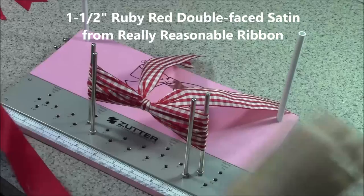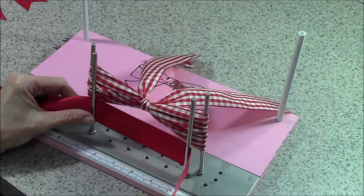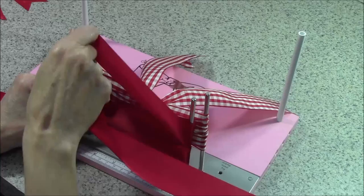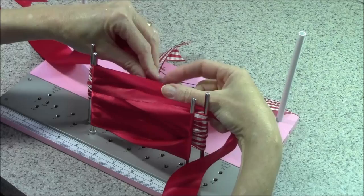Next I have an inch and a half wide double face satin in red. Being that this is a little bit bulkier than the gingham, I'm just going to do three loops with this ribbon. Okay, so now we're going to do the same thing - we're going to go through the center, cross the ribbons over.